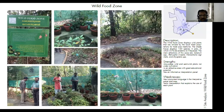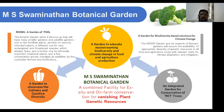We have a wild food section. The center conducted a study of wild food plants of Wayanad district, which revealed around 300 species of wild food plants, of which more than 80 species are edible greens. The garden showcases culinary and curative diversity — local plants, wild food plants — and we have a strong presence of RET (Rare, Endangered, and Threatened) species.